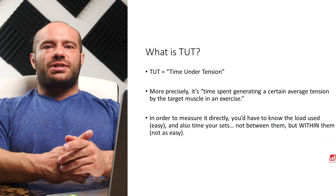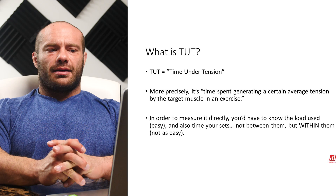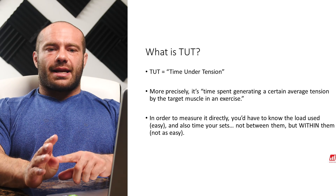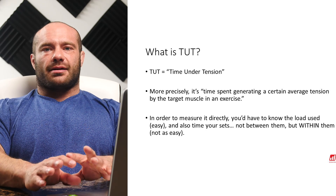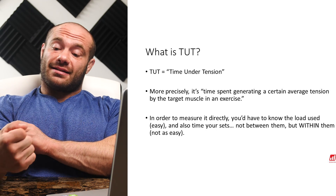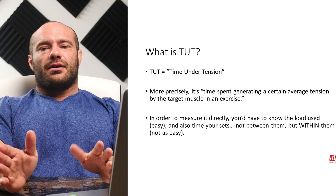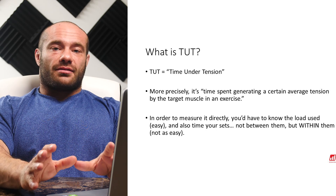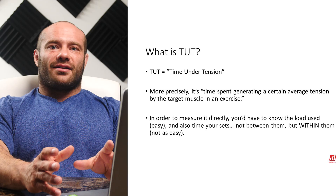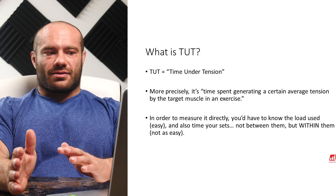So first up, what is TUT? Time under tension — more precisely, more scientifically, it's time spent generating a certain average tension by the target muscle in an exercise. So if your biceps do this for about 30 seconds and the average tension is 20 pounds, then it's 20 pounds of tension and 30 seconds of time — time spent generating tension, or time under tension.